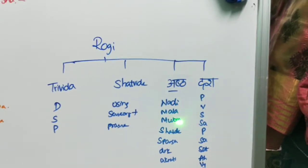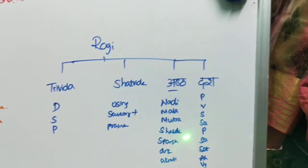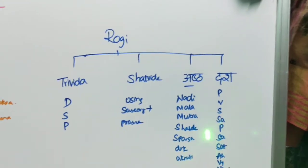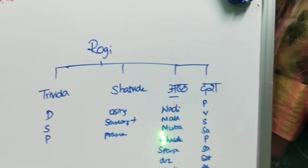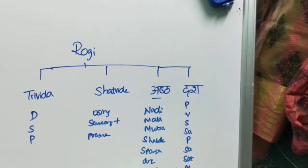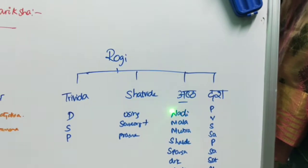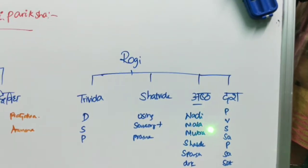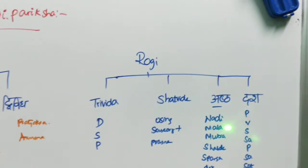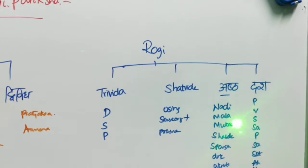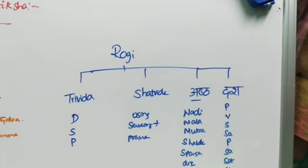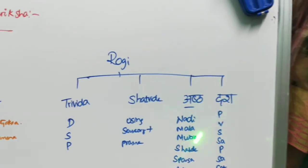To recap Asta Vidha Pariksha: Nadi, Mala, Mutra, Shabda, Sparsha, Druk, and Akruthi. For knowledge purposes we have discussed what is dealt in each of these parameters.